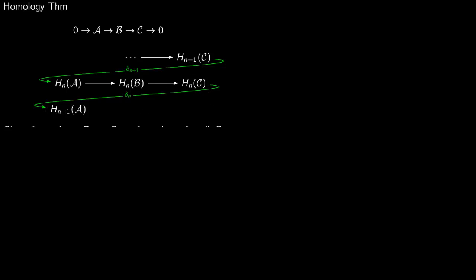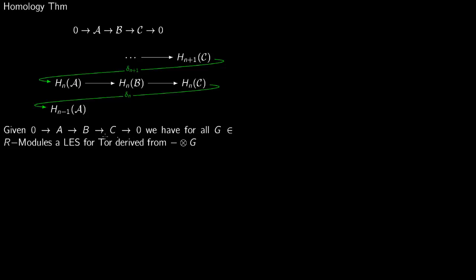Now we want to use this for Tor. Say you're given a short exact sequence of modules — A, B, C are R-modules. You consider G as an R-module, and first you do the projective resolution of G. So you have G, then P₀, P₁, and so on up to Pₙ₋₁, Pₙ — a projective resolution of G.